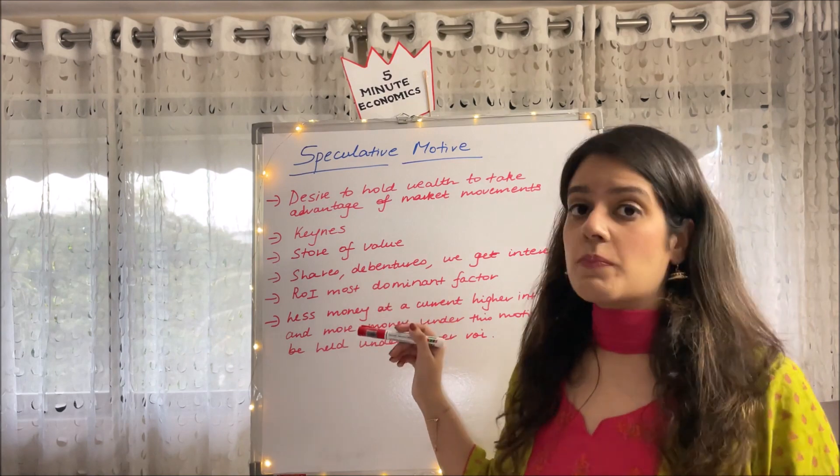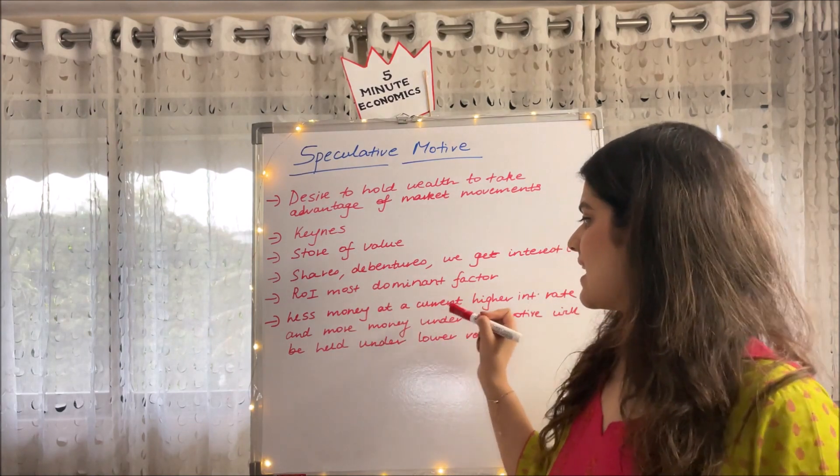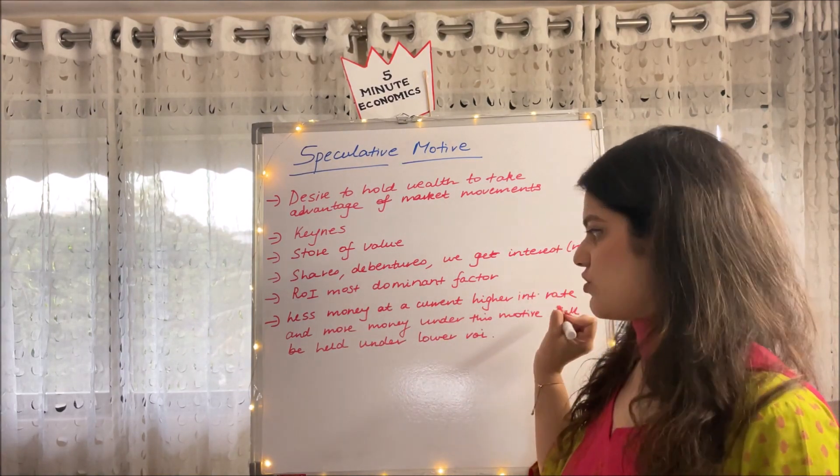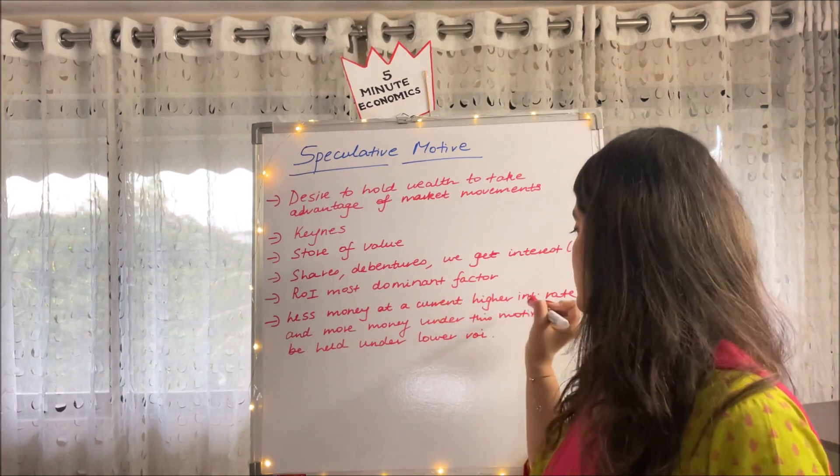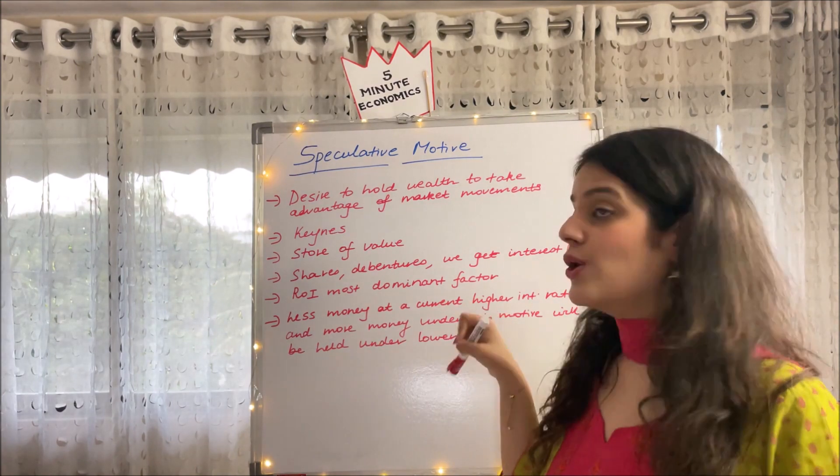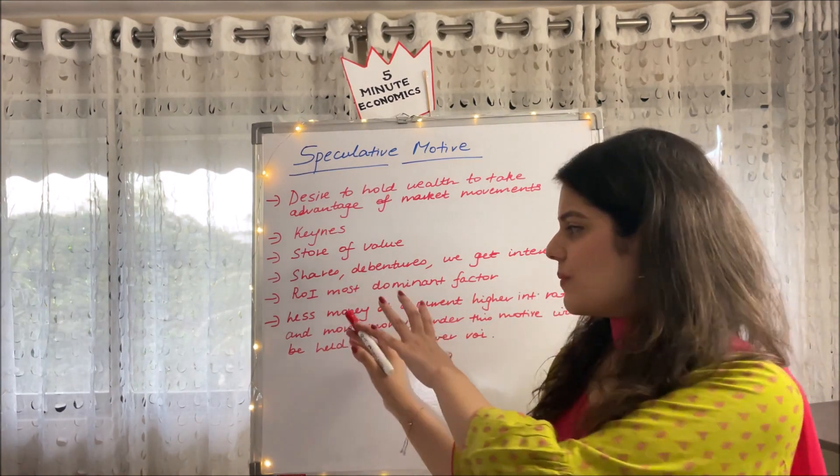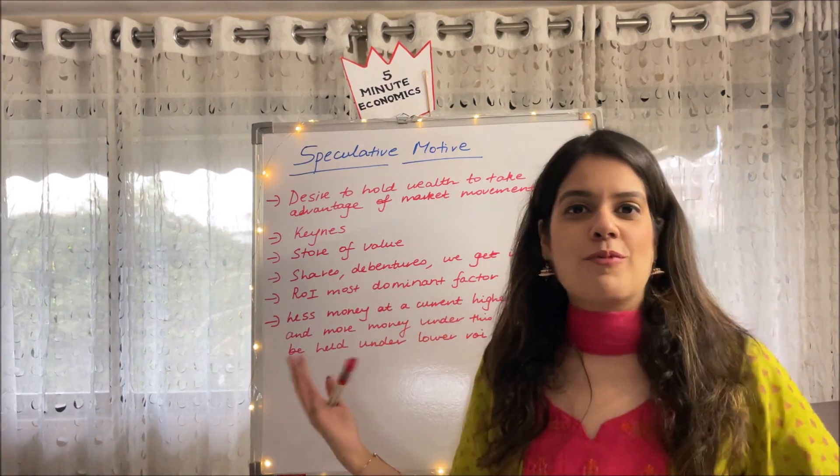It states that for speculation, less money is held at the current higher interest rate and more money under this motive will be held under lower rate of interest. I will be explaining this very statement with the help of a diagram now.